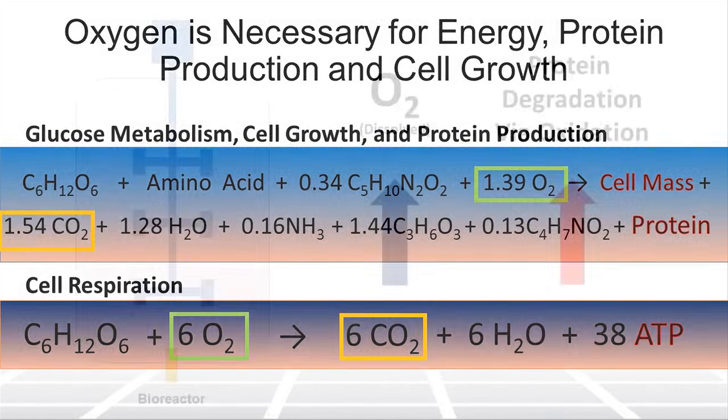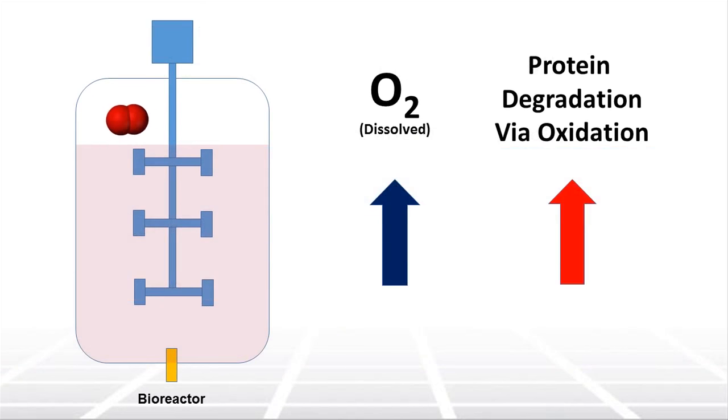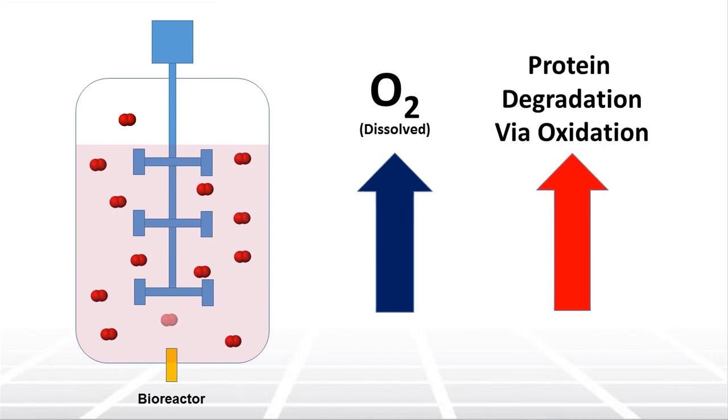Although increasing DO is important to maintain cell growth, controlling the upper limit of oxygen in cell culture is also important because reactive oxygen species can chemically degrade the protein of interest. This is why the operating range of dissolved oxygen typically falls within the 30-40% range.